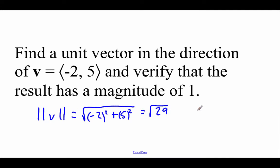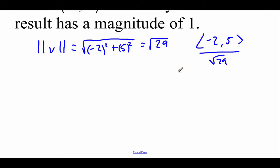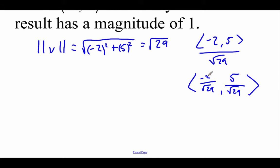Now if we take our vector v — which is that negative 2, 5 vector — and divide it by the square root of 29, what we end up doing is taking each individual piece of our vector and dividing it by that square root of 29. It works a lot like the scalar multiplication from part 1. So we end up with negative 2 over the square root of 29 and 5 over the square root of 29, and we call that our vector u, since this is now a unit vector.